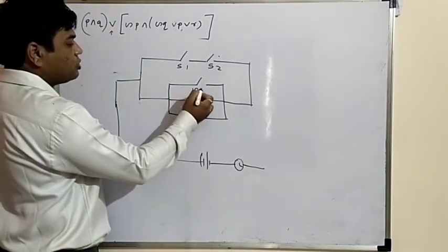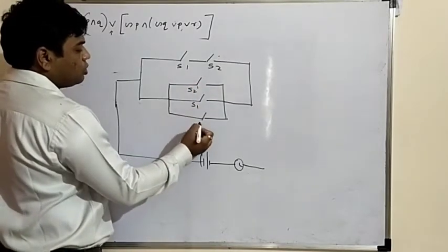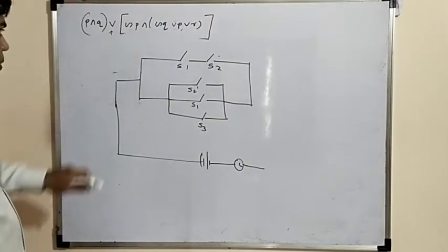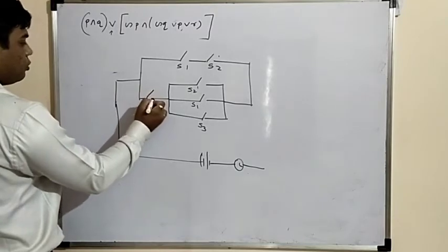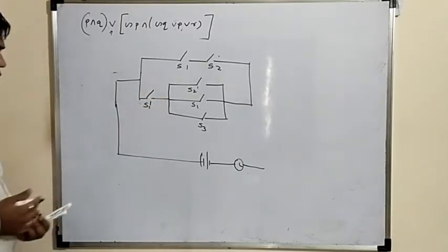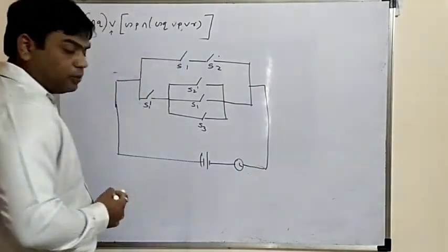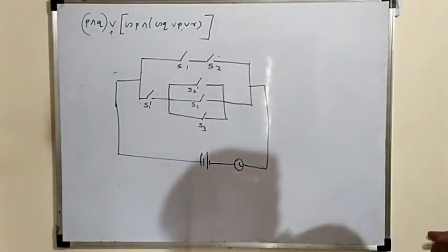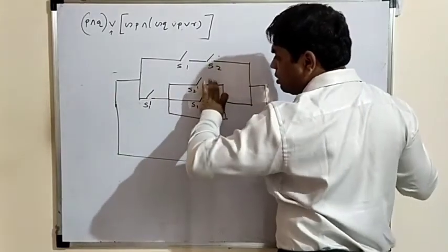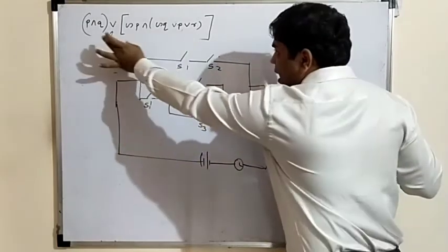Negation Q means S2 dash, P is S1, R is S3. Now only negation P is remaining — negation P is S1 dash. The simplest form of the circuit now has negation Q, P, and R in parallel, and this ends with negation P.